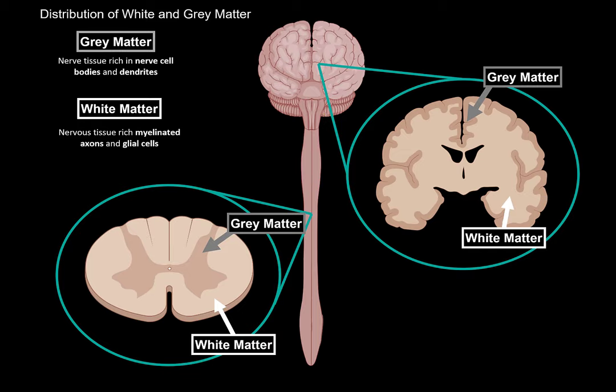So gray matter, cell bodies and dendrites. White matter, myelinated axons. Cool. Now, here's something you'll see a lot when you study the central nervous system anatomy. It's tracts. Nerve tracts. Nerve tracts are bundles of axons that connect gray matter to gray matter. Or fibers that connect nuclei to nuclei.